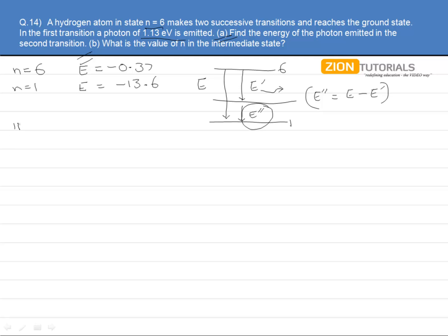I can say that the second transition energy E double dash is basically equal to 13.6 minus 0.37. So this comes out to be the difference of this one minus 1.13, that is minus E dash. This is capital E and this is E dash, giving us E double dash to be 12.09 electron volts, that is approximately 12.1 electron volts. So this is the answer of the first part.